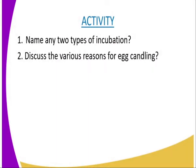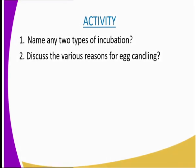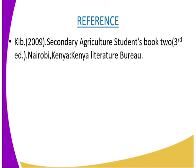We have come to the end of today's lesson. I will mark the end by assigning an activity. Question one: name any two types of incubation as discussed in this lesson. Question two: discuss the various reasons for egg candling, mentioning them as explained during the lesson. For reference, you can refer to the Secondary Agriculture student book, Form 4, published by the Kenya Literature Bureau.